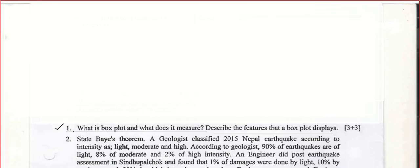The first question — this is from 2075 by the way — is: what is a box plot and what does it measure? Describe the features that a box plot displays. There will be plenty of theory questions in your probability and statistics exam, so make sure you take a statistics book and learn the theory properly. If you write only one or two points in your exam, you may not get the six marks given here. Theory questions must be answered properly with genuine points.